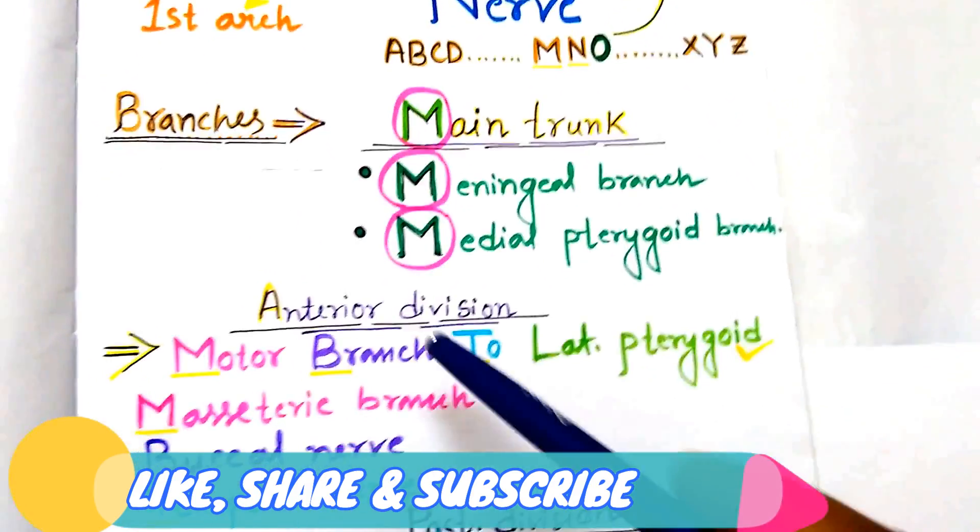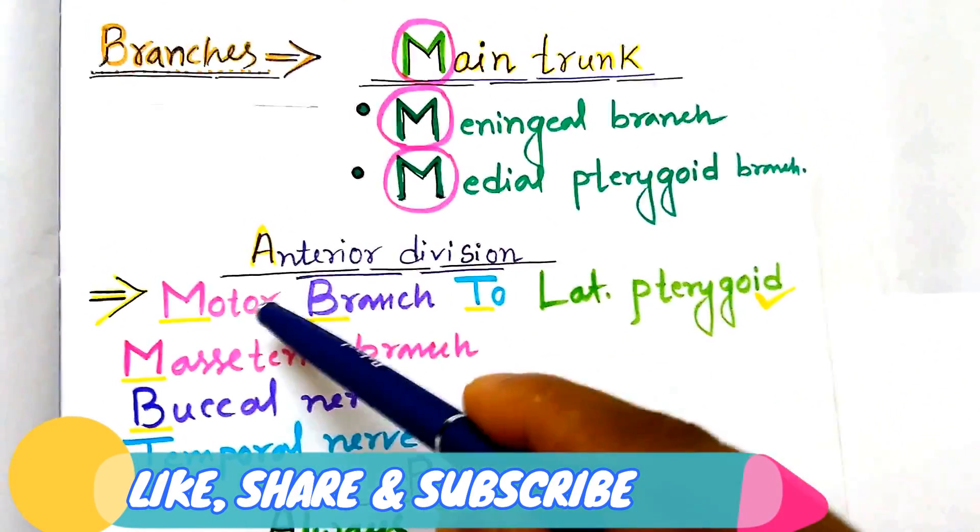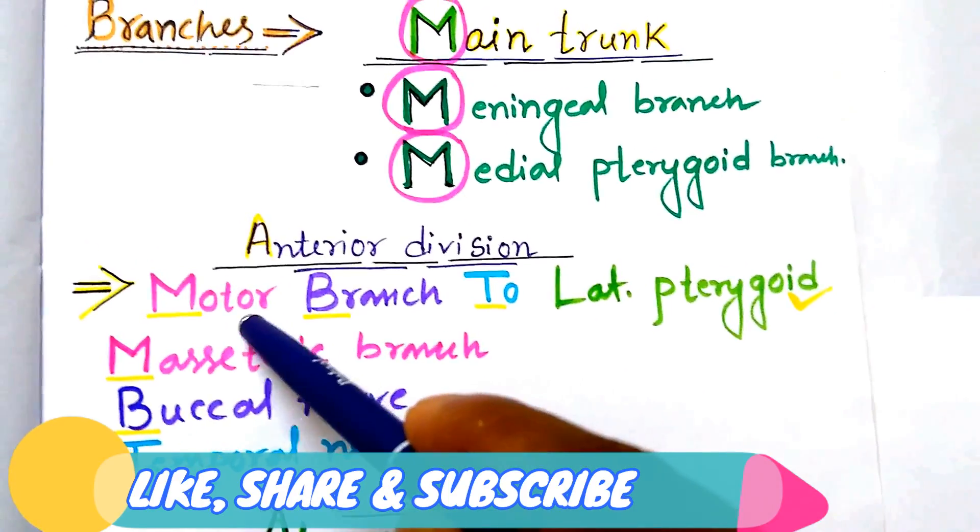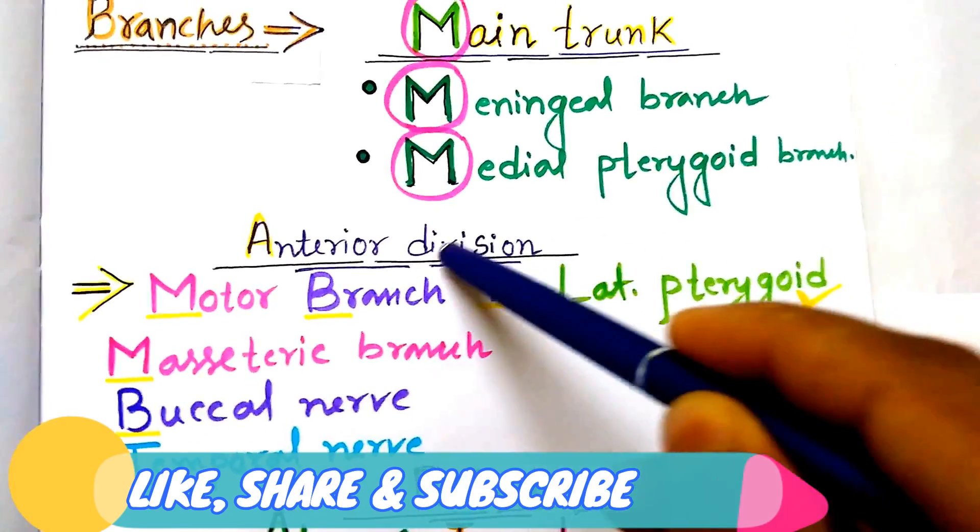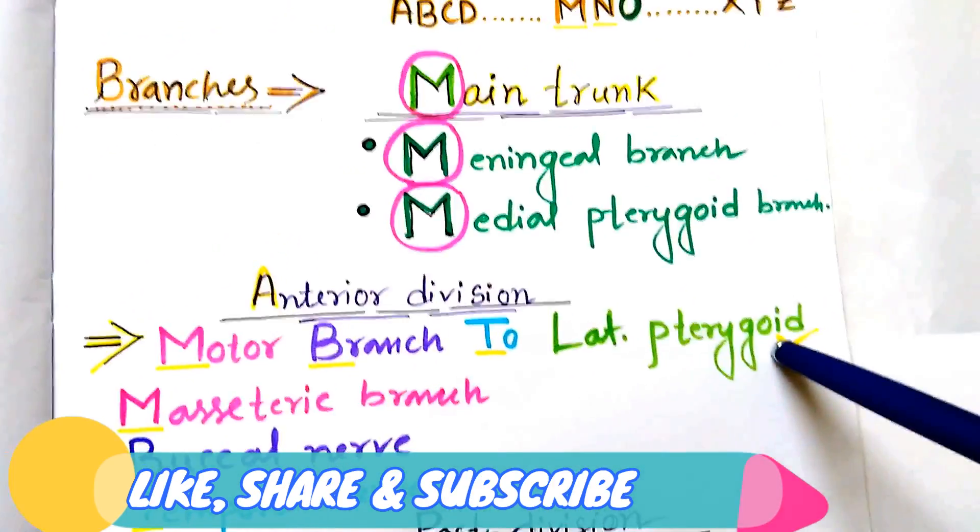Now the anterior division. Anterior division of mandibular nerve, how to remember? Just remember that there is motor branch to lateral pterygoid. From the anterior division of mandibular nerve there is motor branch to lateral pterygoid.